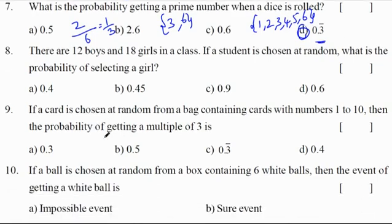There are 12 boys and 18 girls in a class. If a student is chosen at random, what is the probability of selecting a girl? Total students are 12+18 = 30. Selecting a girl student is 18. So 18/30 = 0.6.